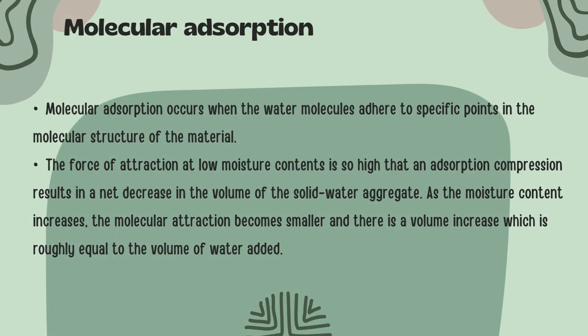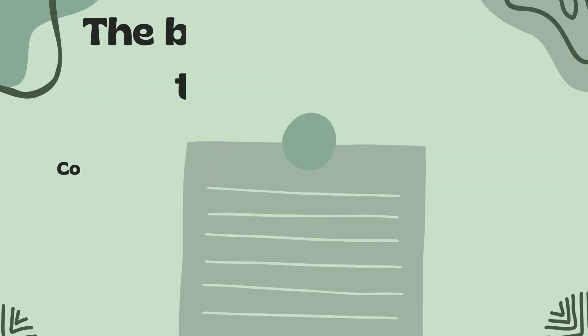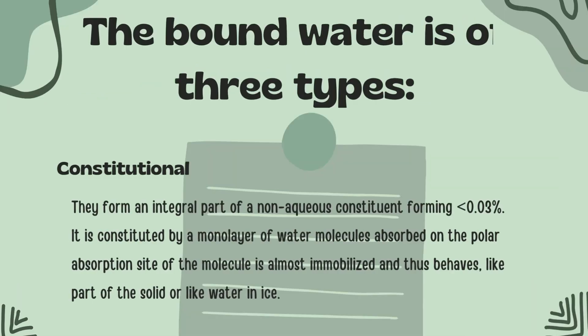Bound water is of three types: constitutional, vicinal, and multilayer. First is the constitutional type. It forms an integral part of a non-aqueous constituent, forming less than 0.03%. It is constituted by a monolayer of water molecules absorbed on the polar absorption site of the molecule, is almost immobilized, and thus behaves like part of the solid or like water in ice.